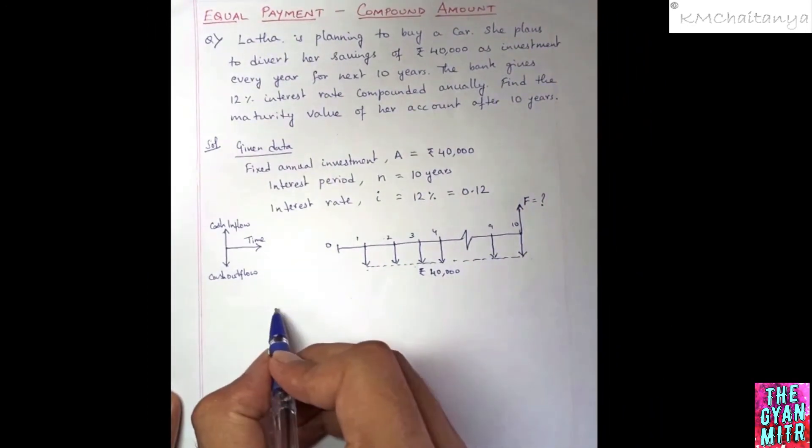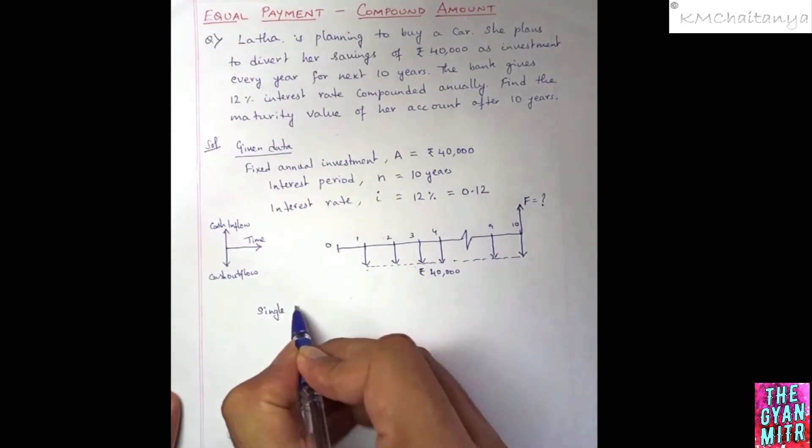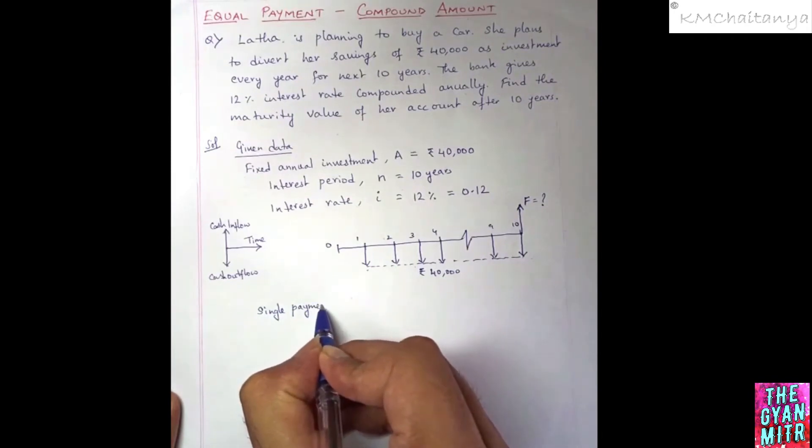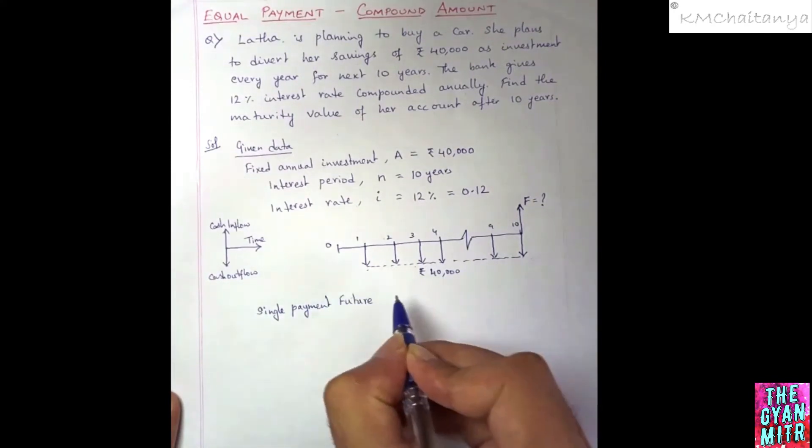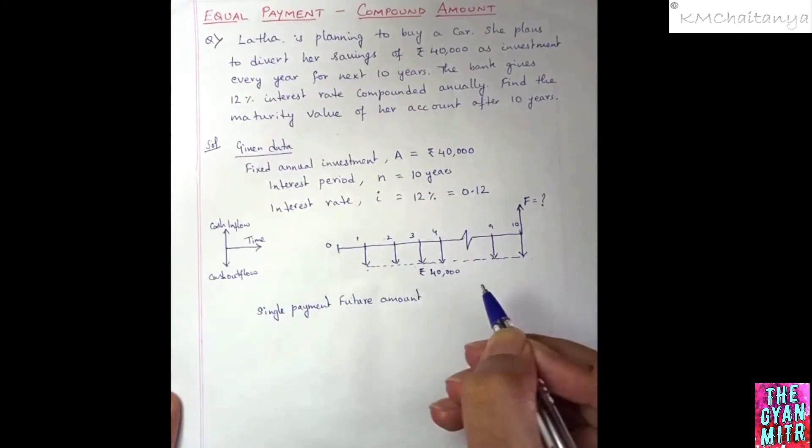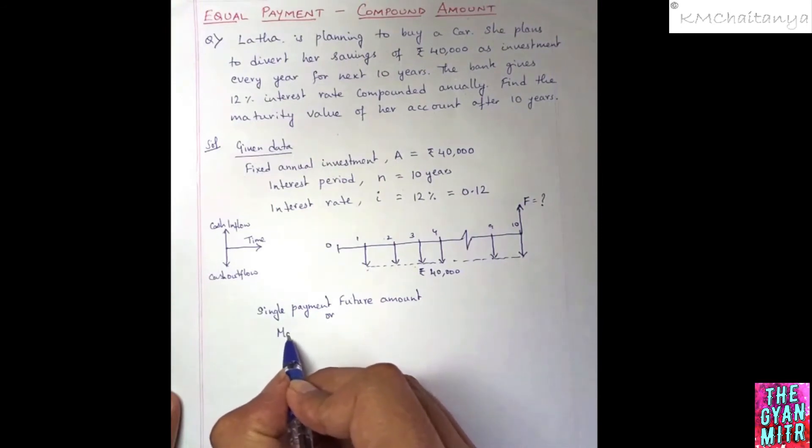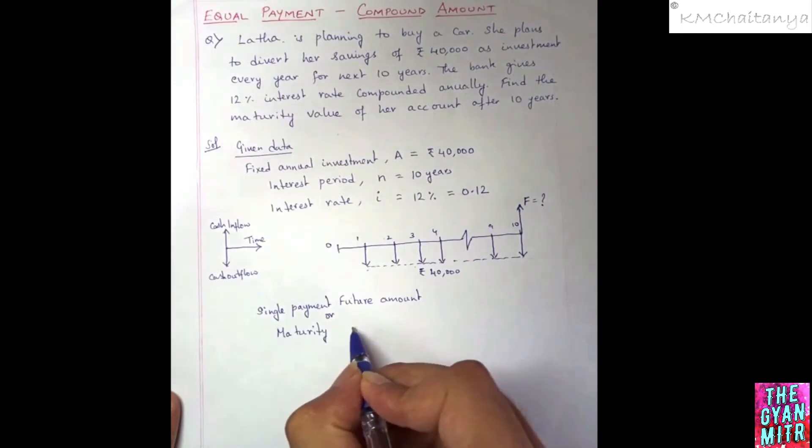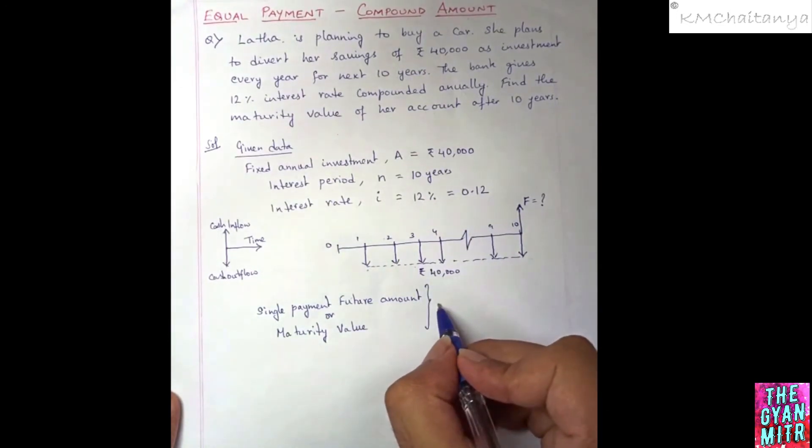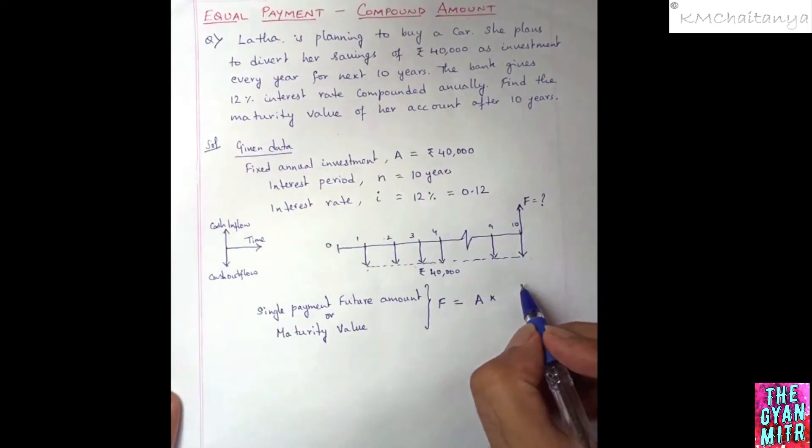Which is F is equal to A into 1 plus I to the power of N minus 1, this divided by I. So this is the equation, A multiplied by 1 plus I to the power of N minus 1 divided by I.